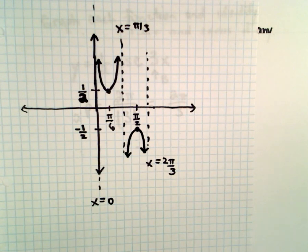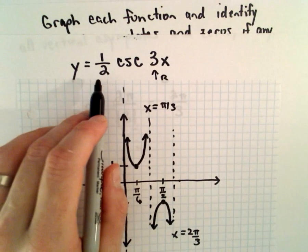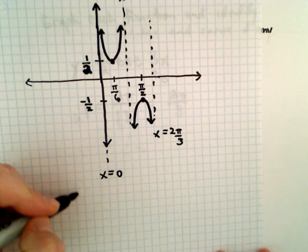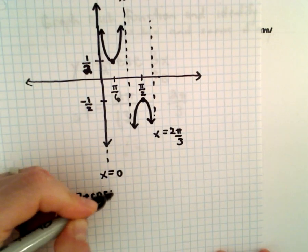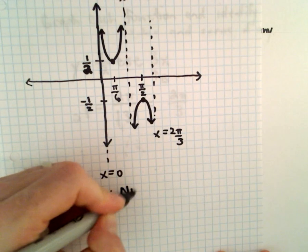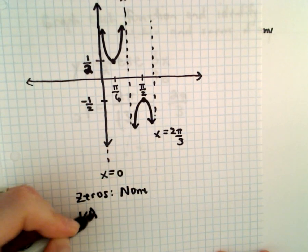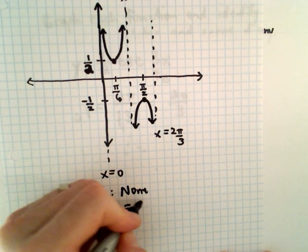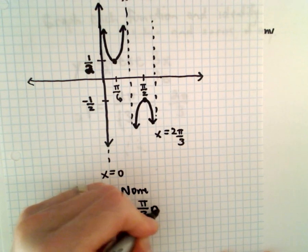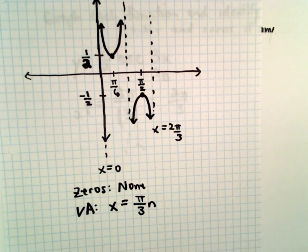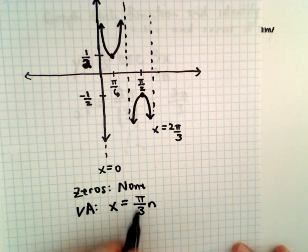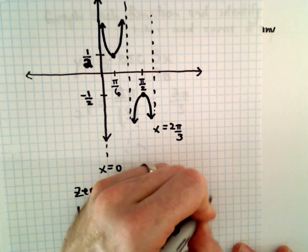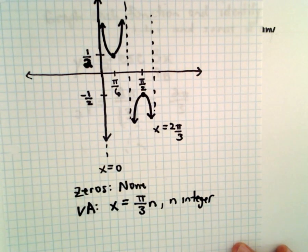There's one period of the graph y equals one-half cosecant of 3x. For the zeros, there are none — it doesn't cross the x-axis. The vertical asymptotes are going to occur at multiples of pi over 3. We can write that as x equals pi over 3 times n, where n is an integer.